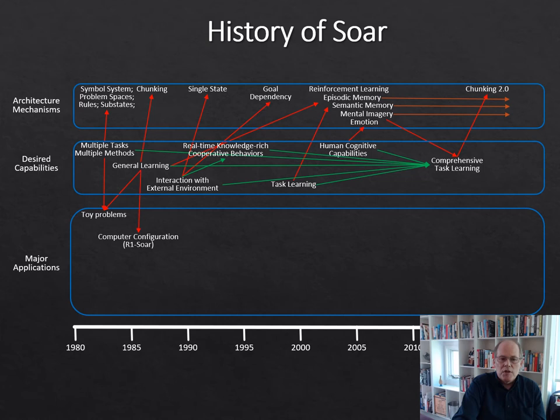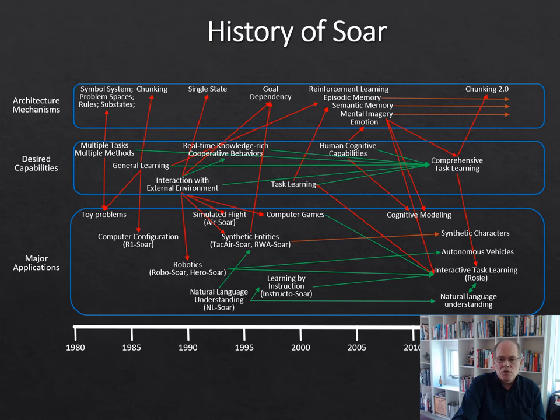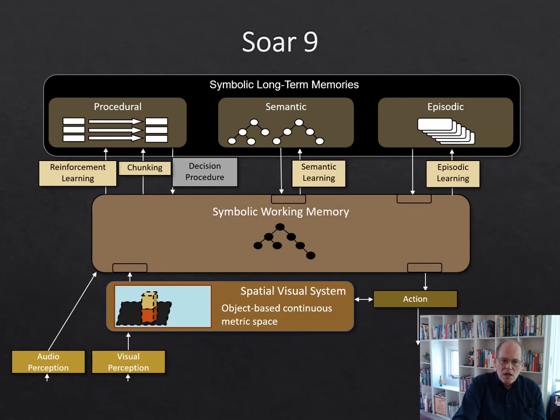In terms of major applications, we started with toy problems, then did some internal reasoning problems like the R1 configuration problem, and then started doing robotics. We've done a lot with robotics over the years — autonomous vehicles, synthetic characters, cognitive modeling, and natural language understanding. So we try to cover the whole gamut of different kinds of AI applications.